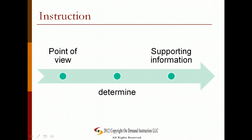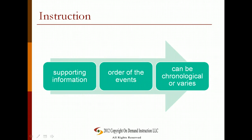The point of view helps determine the kind of supporting information used to develop the story. An experience related through the eyes of a first person participant would be quite different from one related by a limited third person observer, who can report only physical appearances and actions. The supporting information is usually arranged in straight chronological order. Occasionally, however, a writer may vary this order by establishing the endpoint or result of the experience and then narrating the events that led up to it.